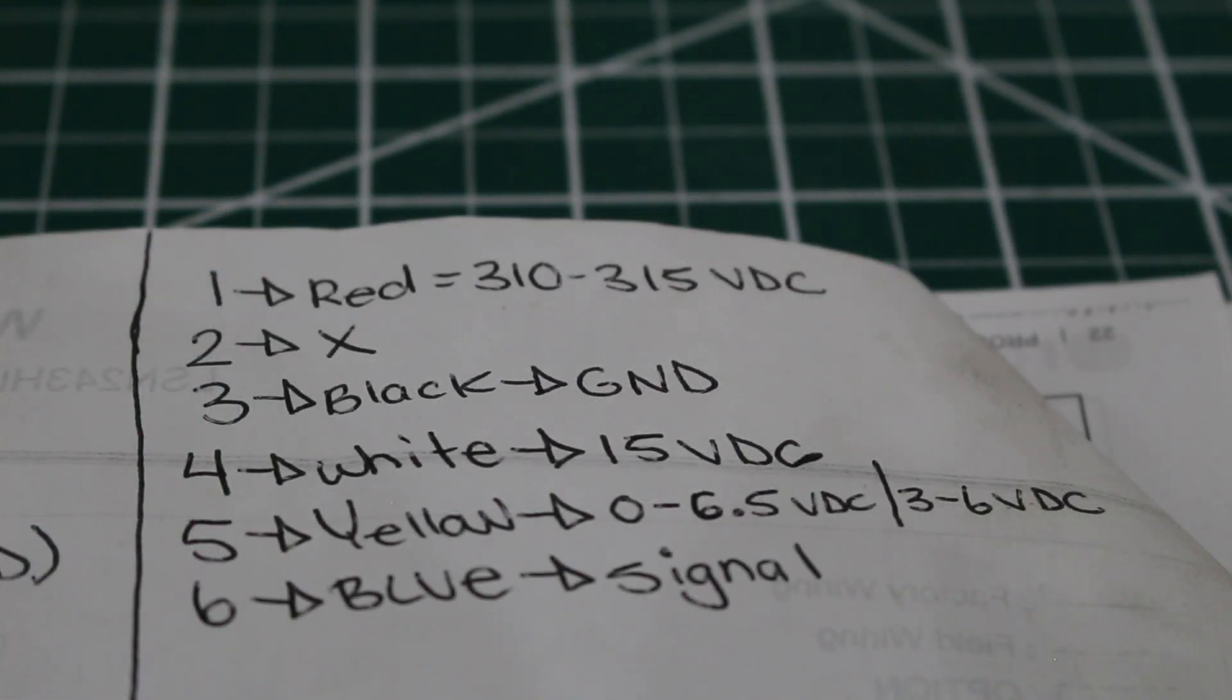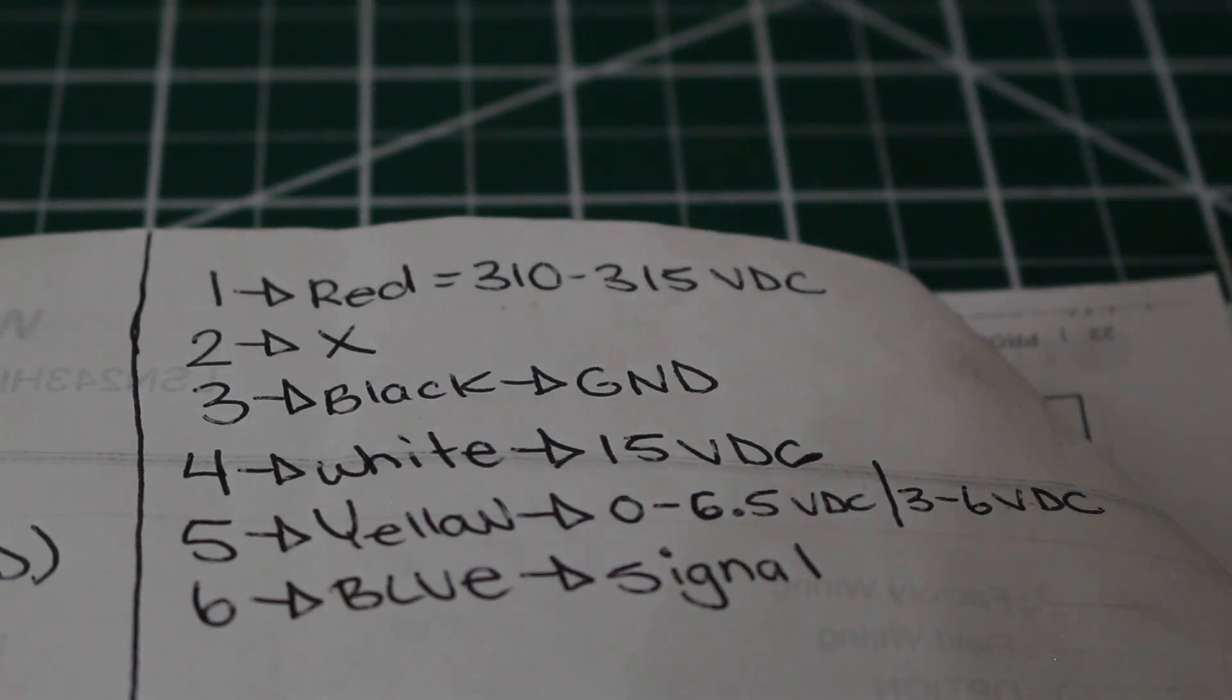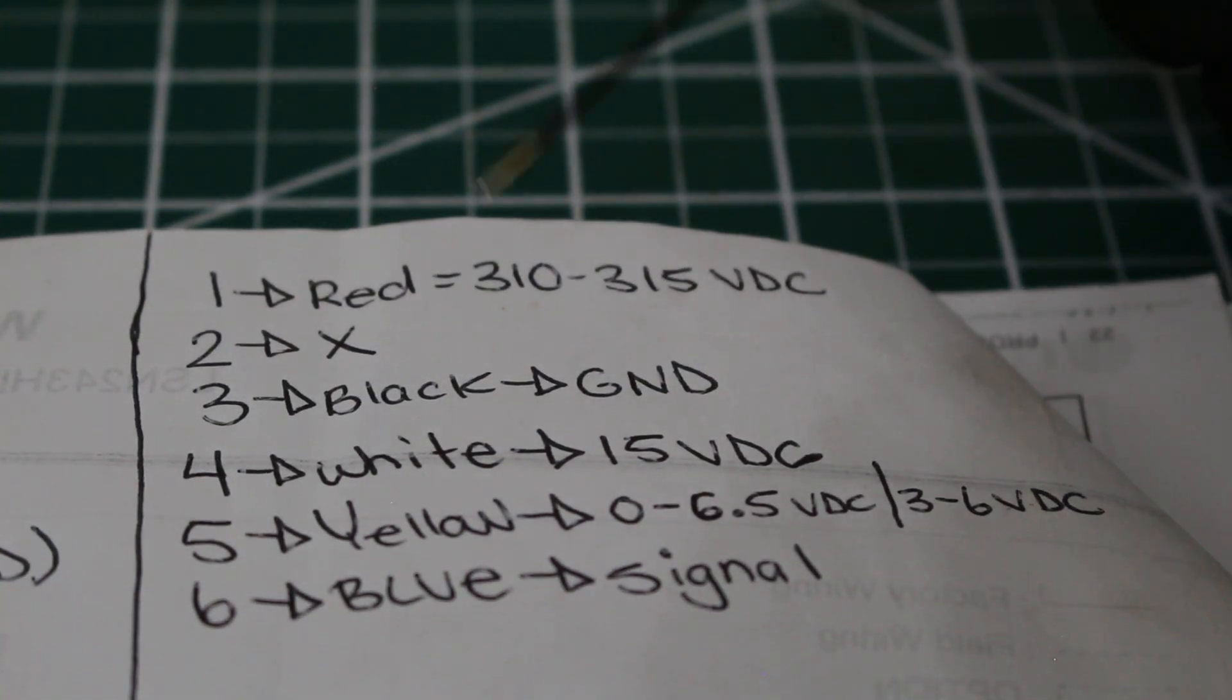This is how you would check the voltage. So black is always going to be your reference point. So that is terminal 3. So you're going to check from terminal 3 to 1, 3 to 4, 3 to 5, 3 to 6. So first off, 1 to 3, which is going to be your red. So between red and black, you should have your voltage. Remember, you're checking volts DC. So you should be getting 310 to 315 volts. That's typical of what these motors run.